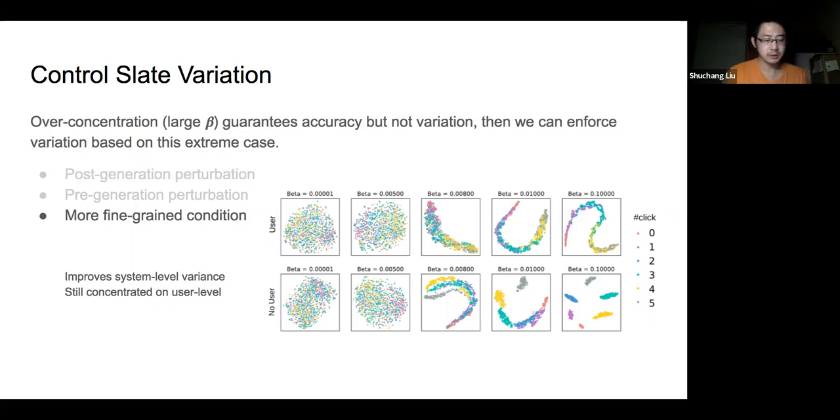This basically tells us when the given condition is fixed, item variation is still primarily affected by whether the decoder learns to model the variety of slates or not.